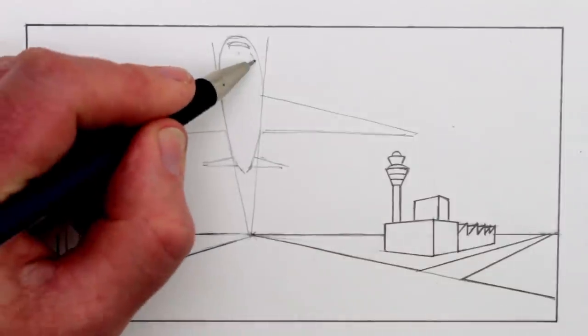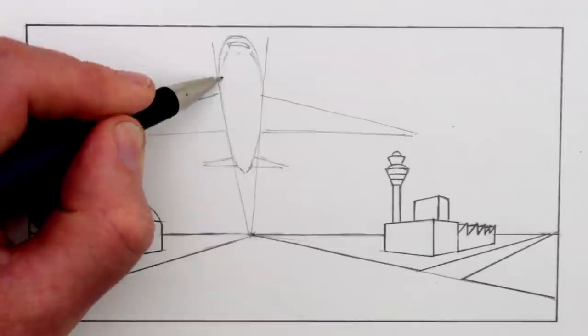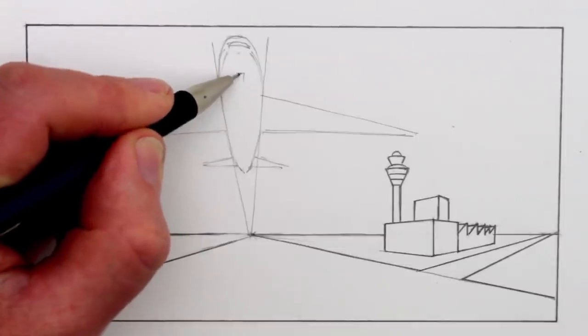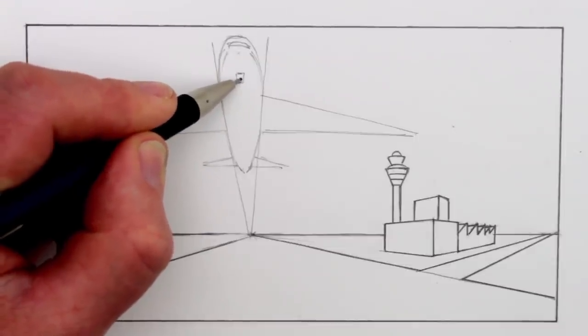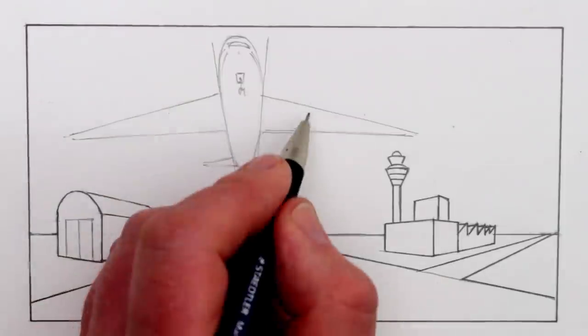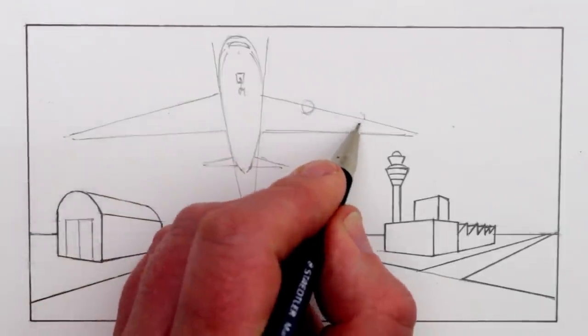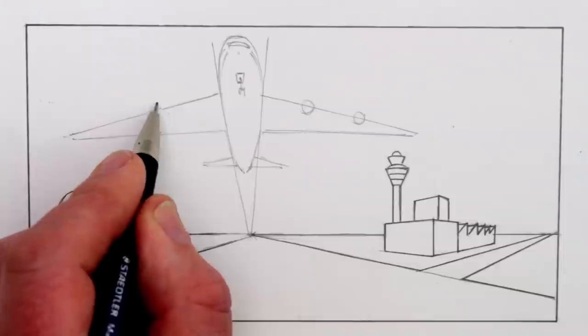I think I'll add some stripes either side of the body of the plane. We can draw a landing wheel at the front here. Now I'm going to add four circles for the four engines on this plane, two for each wing.